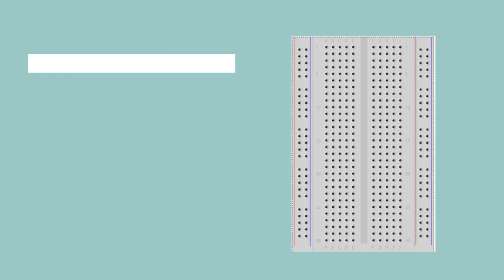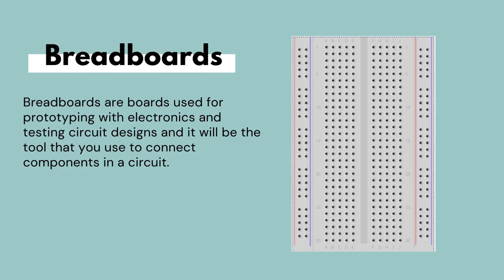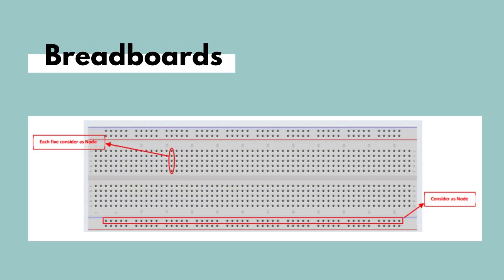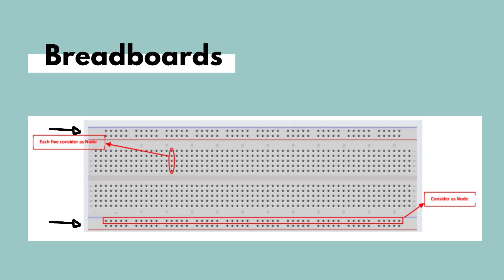Breadboards are boards that are usually used for prototyping circuits with electronics and testing circuit designs, and it will be the tool we use to connect components in a circuit. As seen from the image, we can divide the breadboard into multiple columns: two outer columns specifically for VCC and ground, and two inner columns for connecting electronic components.